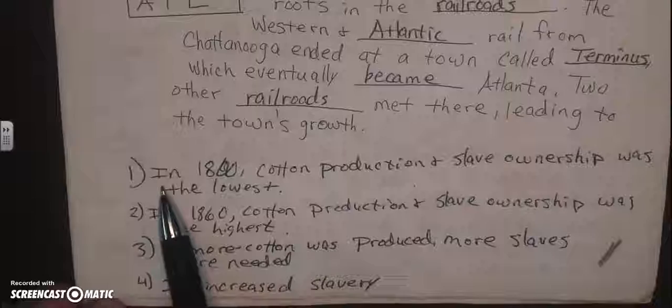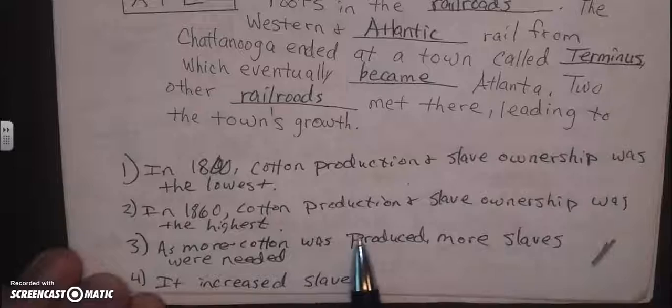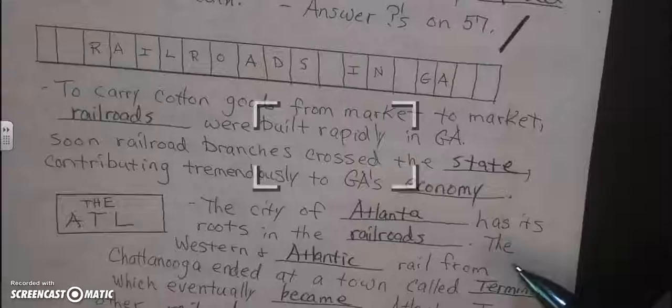In 1800, cotton production and slave ownership was at its lowest. But by 1860, cotton production and slave ownership was at its highest. As more cotton was produced, more slaves were needed, and in the end it greatly increased slavery.